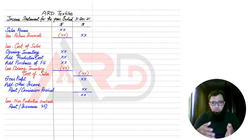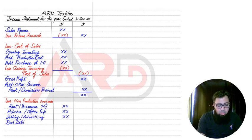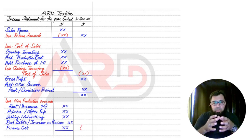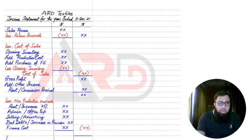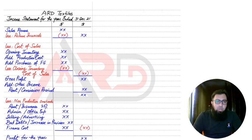Then we have any other expenses such as administration, office, selling, distribution, advertising, bad debts (also known as irrecoverable debts), increase in provision for doubtful debts, and finance costs such as loan interest. Any costs belonging to other than the factory are charged here in the income statement. The final figure after deducting non-production costs from the no-name subtotal becomes profit for the year. If the final answer is positive, it is a profit for the year; if negative, it is a loss for the year. In the next part, we will discuss the statement of financial position — that is, the balance sheet for a manufacturing business.